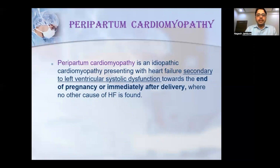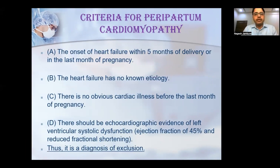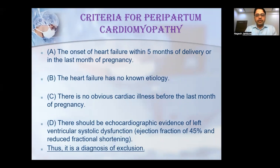The definition of peripartum cardiomyopathy is an idiopathic cardiomyopathy presenting with heart failure secondary to left ventricular systolic dysfunction towards the end of pregnancy or immediately after delivery, where no other cause of heart failure is found. The criteria required are: first, onset of heart failure within five months of delivery or in the last month of pregnancy; second, heart failure of no other etiology; third, no obvious cardiac illness before the last month of pregnancy; and fourth, echocardiographic evidence of left ventricular systolic dysfunction — ejection fraction less than 45% with reduced fractional shortening. It is therefore a diagnosis of exclusion.